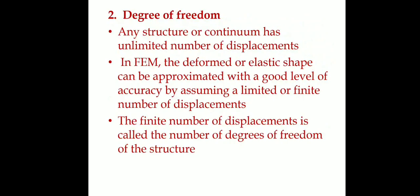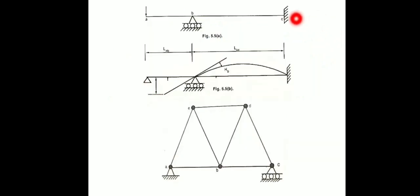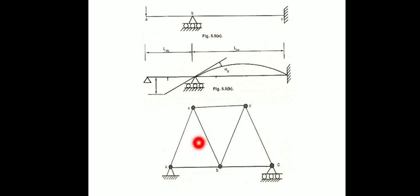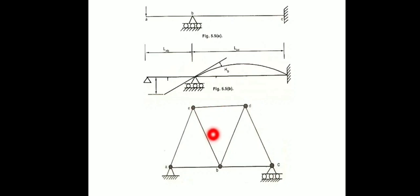Considering a practical example, at point C the degree of freedom is constrained. At point A, both vertical and horizontal motions give a total of 3 degrees of freedom. At points B, D, and E, motion occurs in both x and y directions — that is why we consider 2D elements. At point C, the degree of freedom is 2; B gives 2, D gives 3, E gives 3. Total: 8 degrees of freedom.